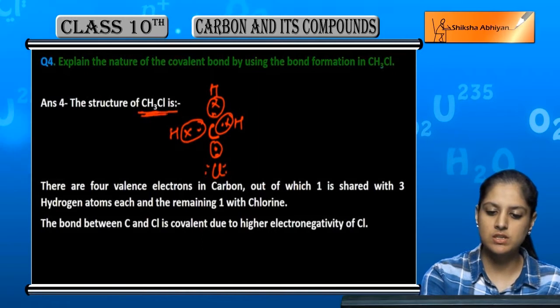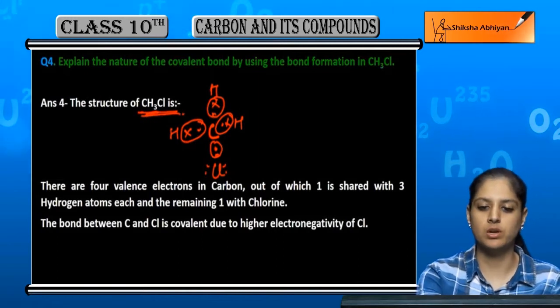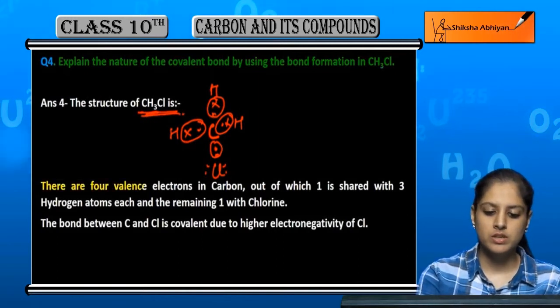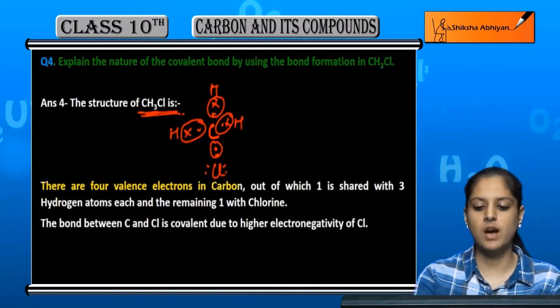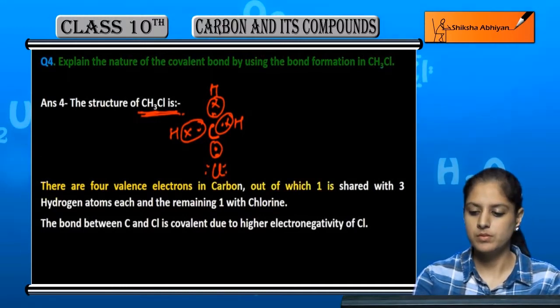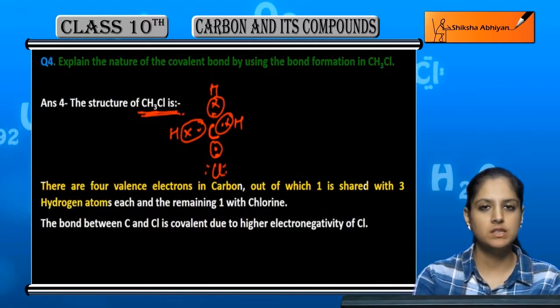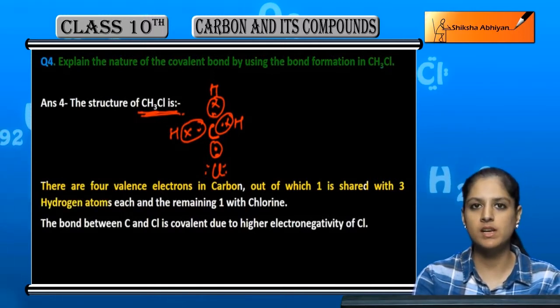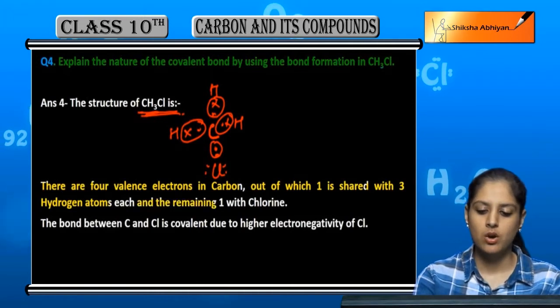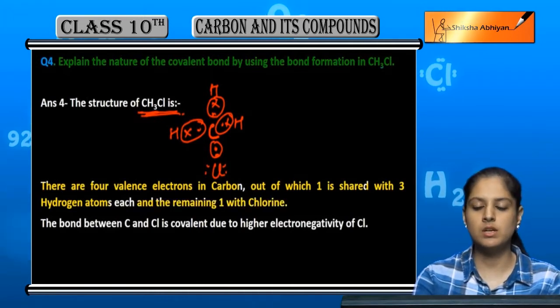There are four valence electrons in carbon. Three hydrogen atoms each share 1 electron with carbon, and the three hydrogen atoms are complete. The remaining 1 electron of carbon is shared with chlorine.